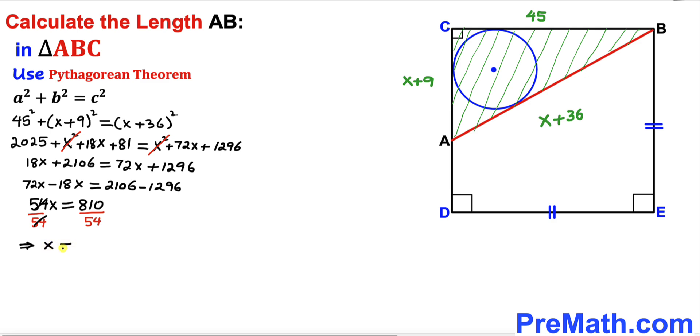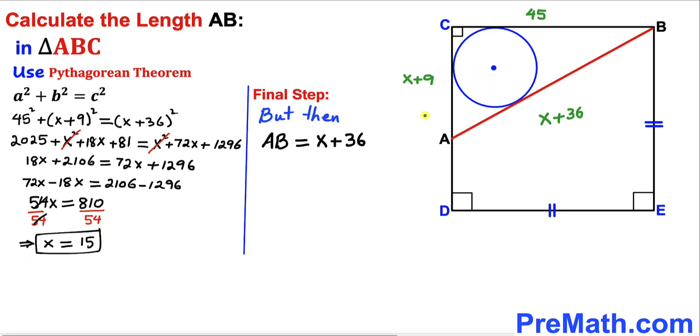Here's our final step. We know that line segment AB is represented by x + 36, as you can see by this equation.